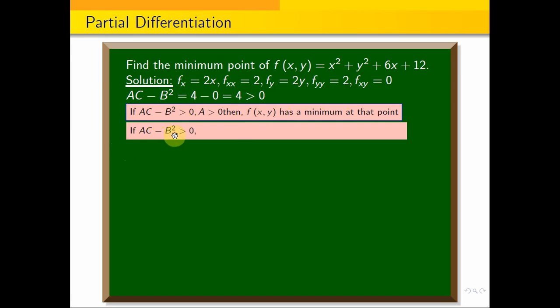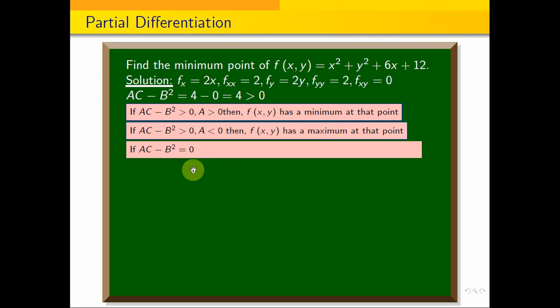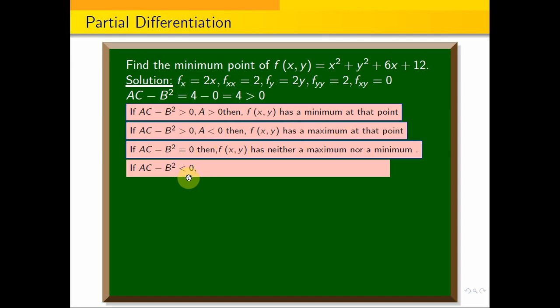If AC - B² > 0 and A < 0, then it's a maximum point. If AC - B² = 0, further investigation is needed. If AC - B² < 0, then the point is not an extremum, it's a saddle point.